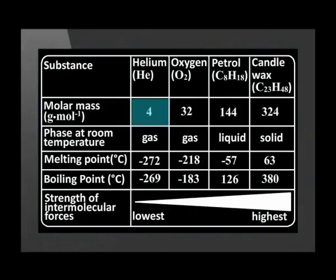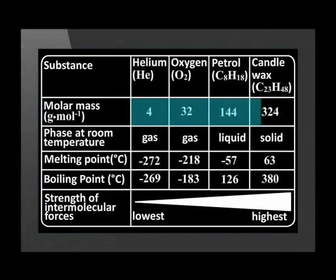Let us compare the molecules on this table from left to right. Helium has the lowest molar mass and therefore is the molecule with the smallest molecular size on this table. The molar mass and therefore molecular size increases from left to right on the table. There seems to be a relationship between molecular size and the properties — as the size of the molecules increases, so does the strength of the intermolecular forces.